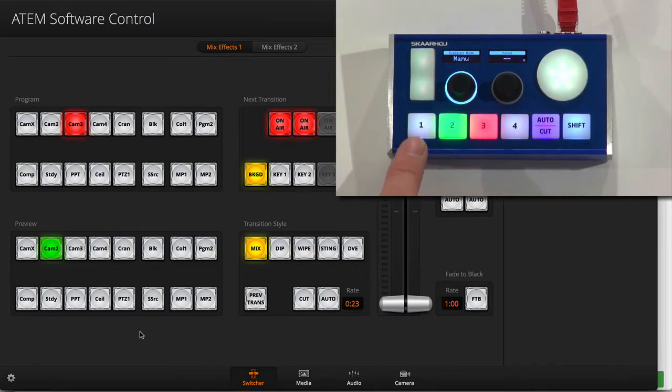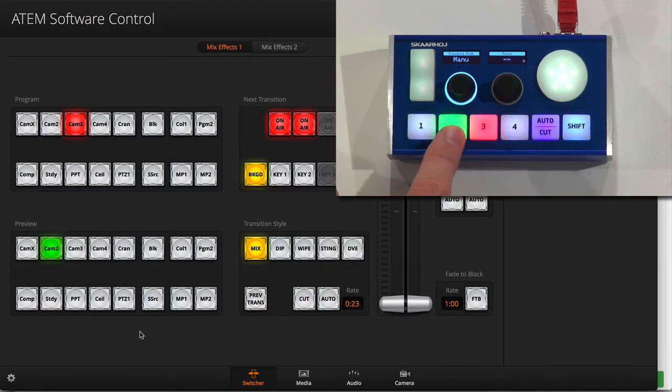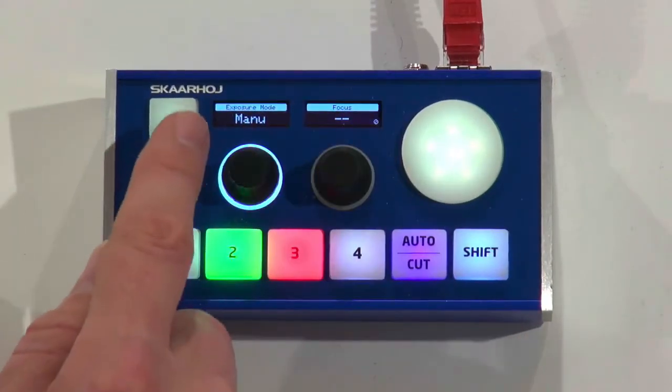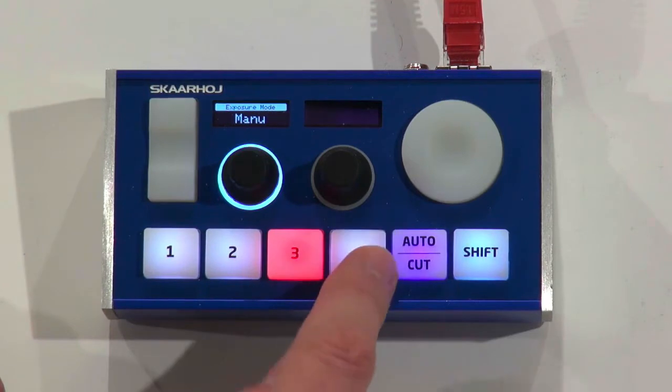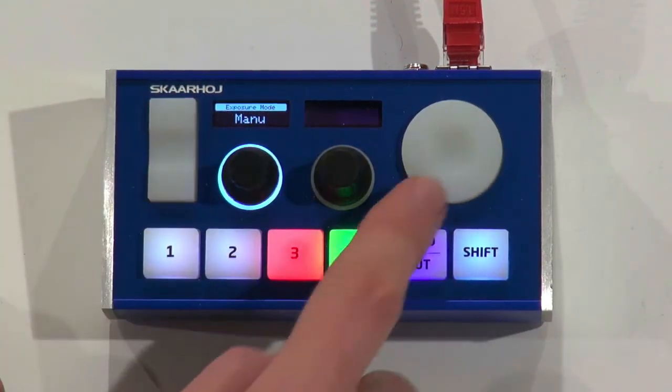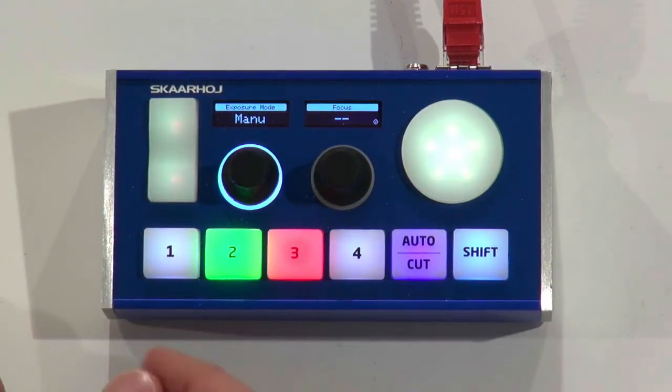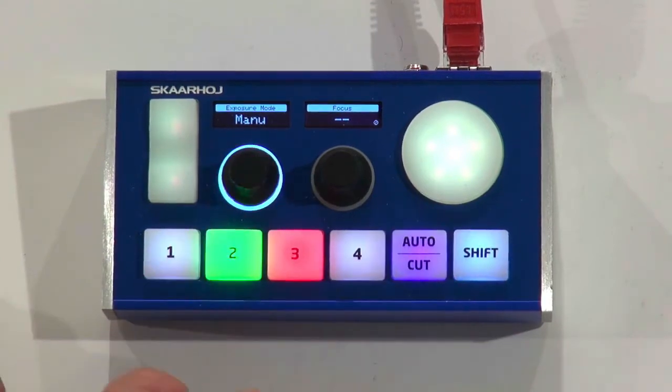So I also have two cameras hooked up. So you can see when I press number one and number two, those two cameras are activated because when I press number three and number four, the light goes out in these buttons. So that's my indication that I have two cameras, two robotic cameras connected on the network.